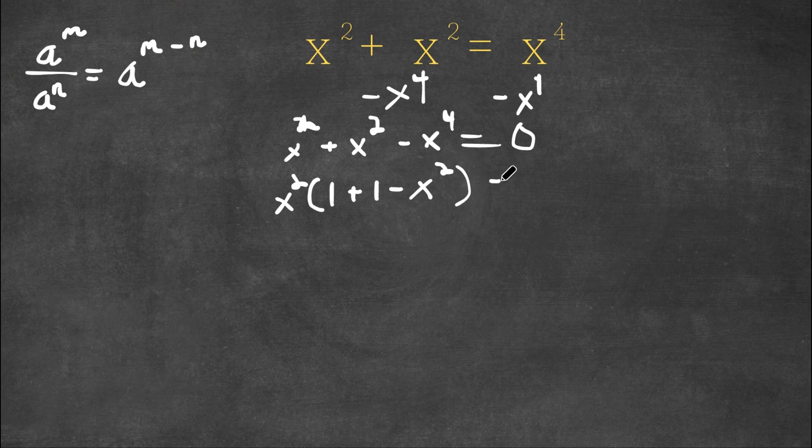And this is equal to 0. Now 1 plus 1 is 2, so now we have x squared times 2 minus x squared equal to 0.